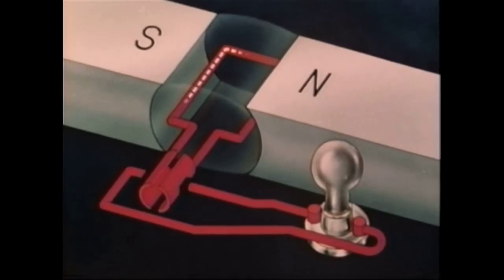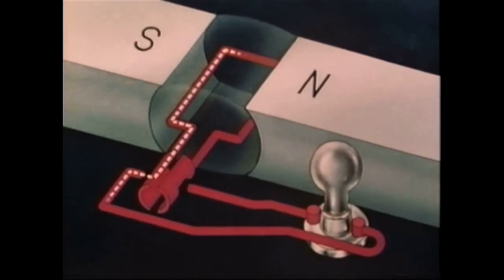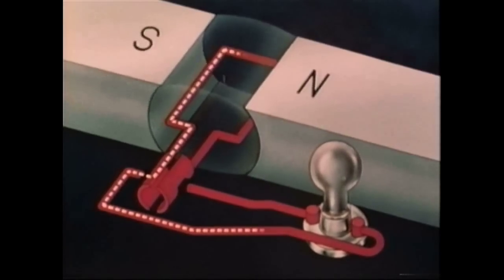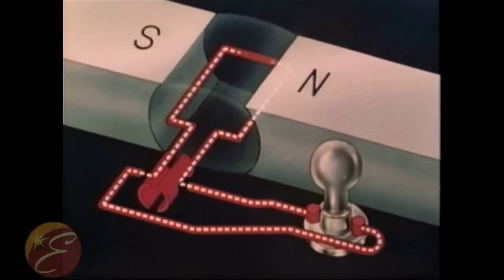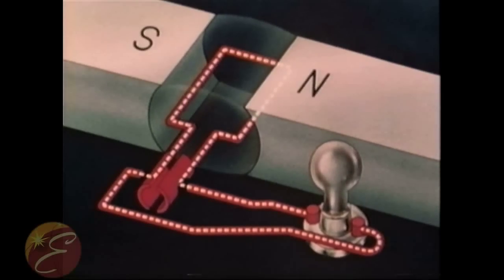As we've seen, the induced current in the rotating coil is opposite in direction from that of the previous half cycle. But the commutator switches the coil connections to the opposite side of the external circuit.